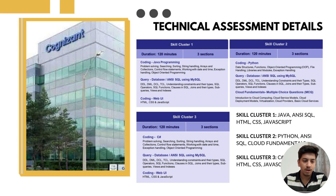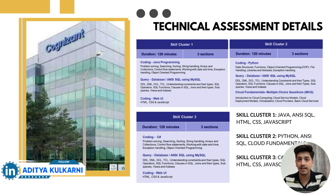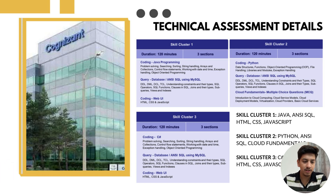Skill Cluster 1 is the default option, best for Java developers and web developers. Languages included are Java, SQL, HTML, CSS, and JavaScript. In the assessment section, there is Java coding where you will be given coding problems to solve using Java.